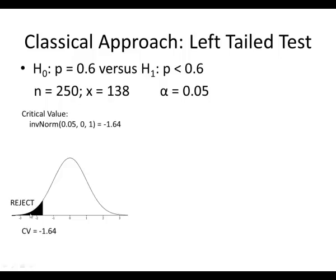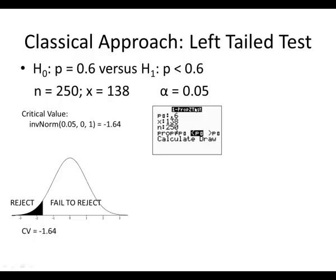On the left-hand side, if our test statistic falls in the shaded region, we're going to reject. If our test statistic is greater than negative 1.64 — anywhere on the right-hand side — then we fail to reject. Now we need to find our test statistic. For proportions, we use a one-proportion z-test. p-sub-0 comes from our null hypothesis — that's our population proportion. x is 138 and n is 250.